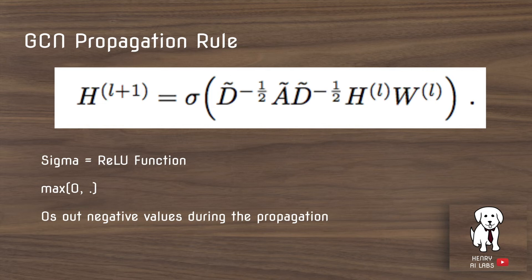And then the activation function could be anything like ReLU, sigmoid, tanh, or Swish. So in these experiments, though, they use the ReLU function. So basically it just zeroes out negative values during the forward propagation.